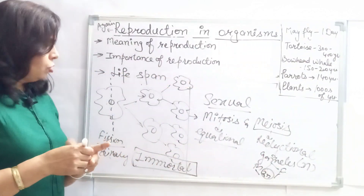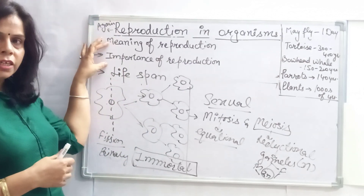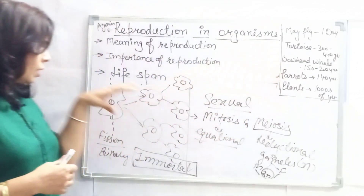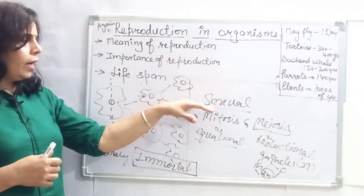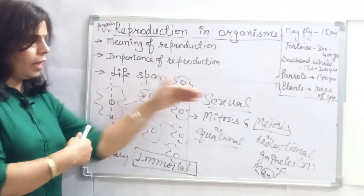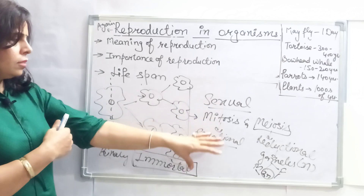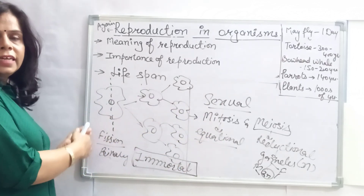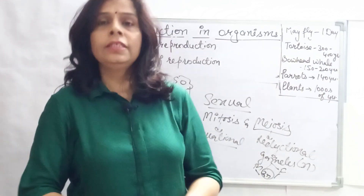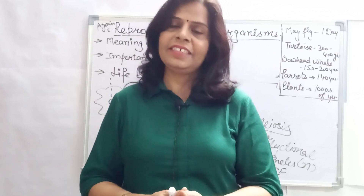Let us revise what we have covered: the meaning of reproduction, the importance of reproduction, lifespan with various examples, and sexual and asexual reproduction with their differences — no variation versus variation, only mitosis versus mitosis and meiosis, clones versus unique individuals. This is all for today. Thank you, hoping to see you soon with a new video. Till then, take care. Bye bye.